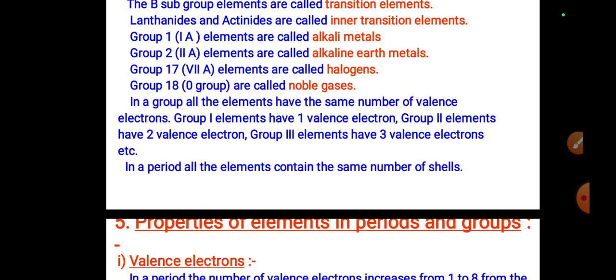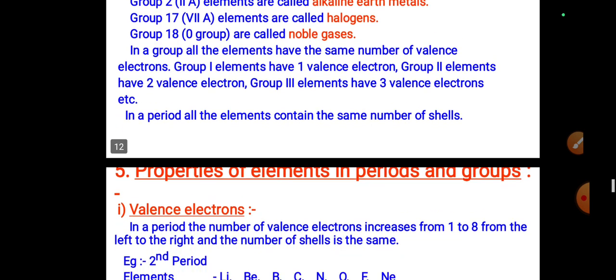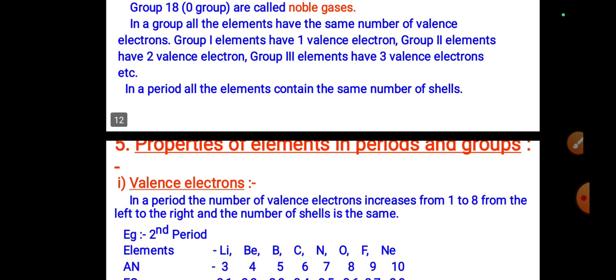Group 1 elements have one valence electron, group 2 elements have two valence electrons, group 3 elements have three valence electrons, and so on. In a period, all elements contain the same number of shells.